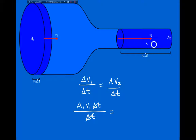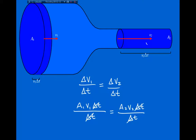Similarly, on the right side, the rate that the water is flowing out of this pipe is A2 V2 delta T divided by delta T. So what we can see is that A1 V1 will be equal to A2 V2. Basically, if you reduce the area of the pipe by a factor of two, the water is going to have to move twice as fast.